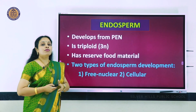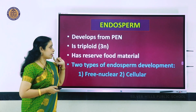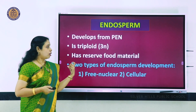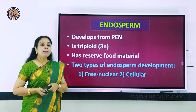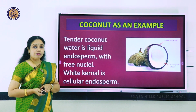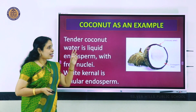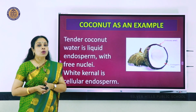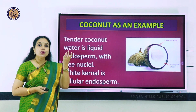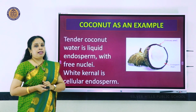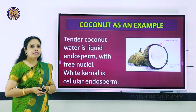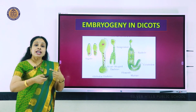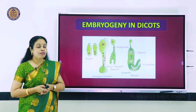Endosperm forms from the primary endosperm nucleus, which is triploid. There are two types of endosperm development: free nuclear and cellular. Both are clearly seen in coconut. The water inside the coconut is liquid endosperm - in that liquid there are many nuclei (free nuclear endosperm). The white kernel is cellular endosperm, where cells have formed around those nuclei. After endosperm develops, next is embryogeny - formation of the embryo.